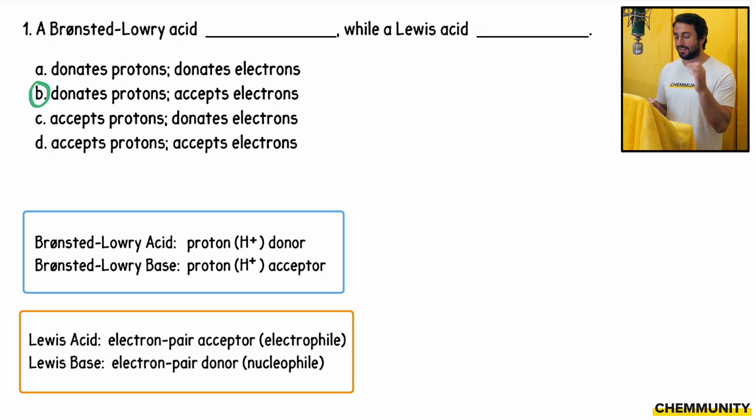Remember, a Bronsted-Lowry acid donates protons. A Lewis acid accepts electrons.